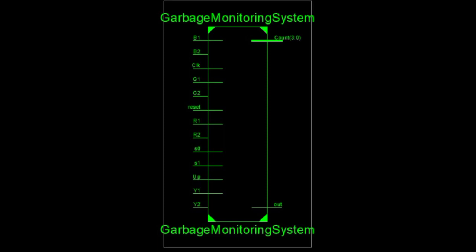This picture shows the RTL schematic for the garbage monitoring system. As you can see, it has 8 inputs which are B1, B2, G1, G2, R1, R2, Y1, and Y2 that represent the color of the bins. On the other hand,